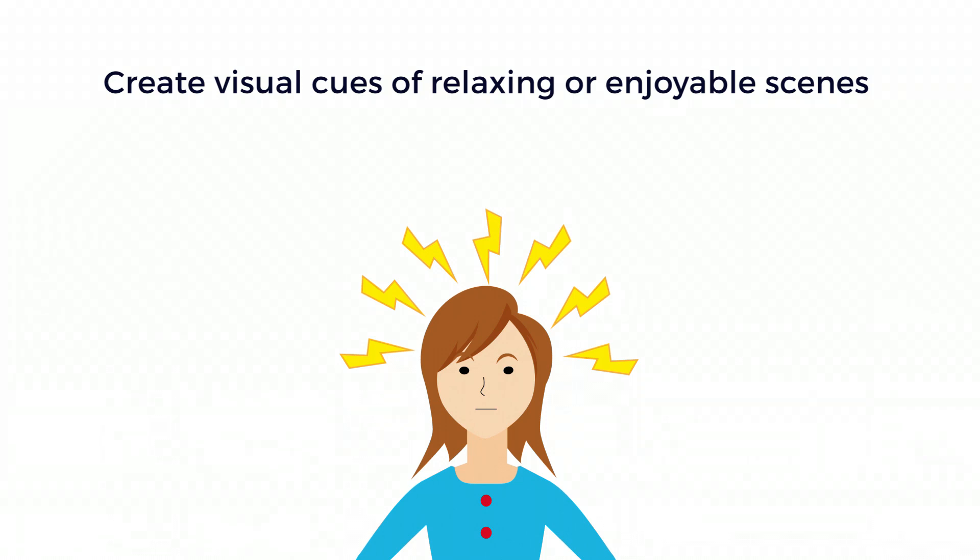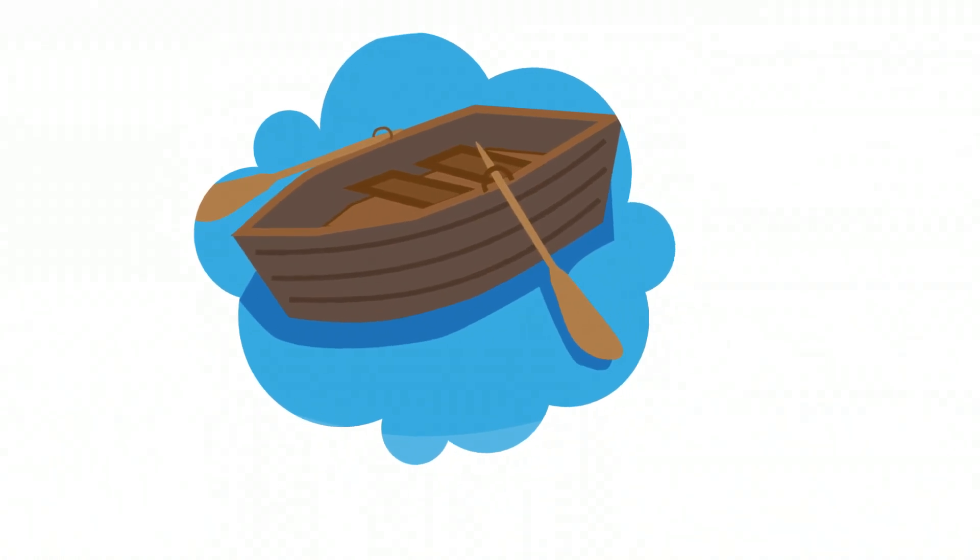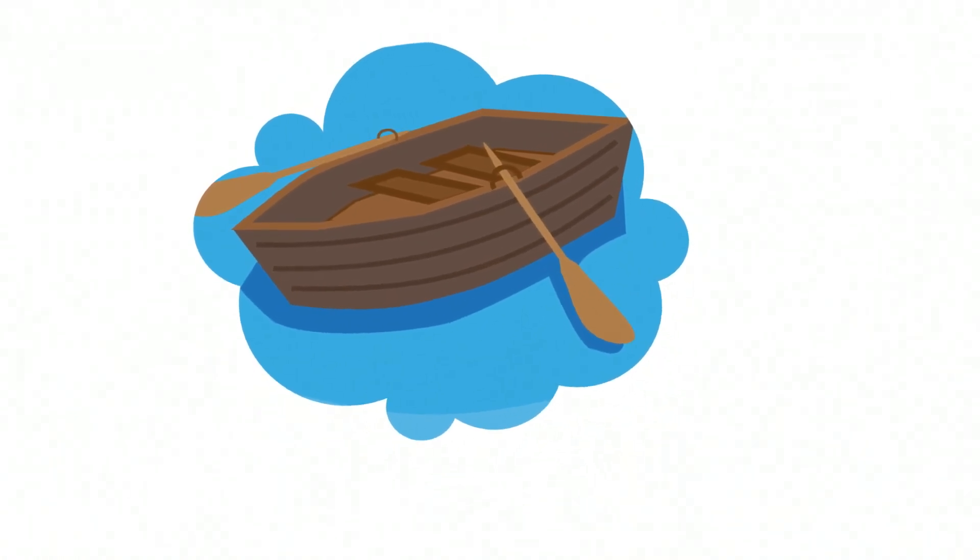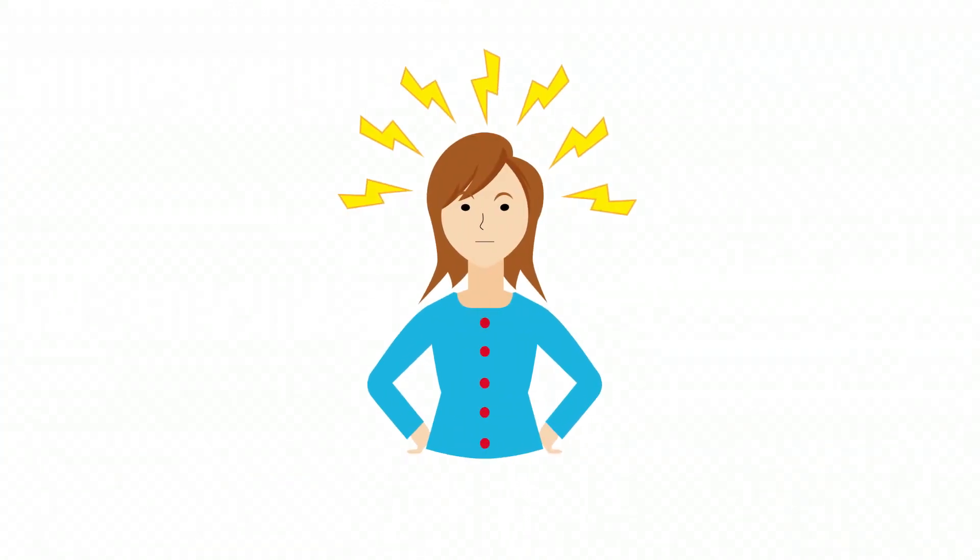For instance, Megan imagines she's adrift in a small boat on a calm lake. She lets go of the oars and is floating aimlessly. Then she makes a conscious decision to take them up again and head in a specific direction.